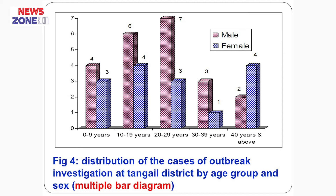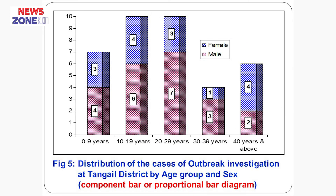This is a component bar diagram or proportional bar diagram. Here, one column is divided into two parts. For example, in the first component of 0 to 9 years old, there are 4 male persons and 3 female persons. The female component is placed on top of the male component, so one bar represents two components. This type of bar diagram is known as a proportional bar diagram or component bar diagram.